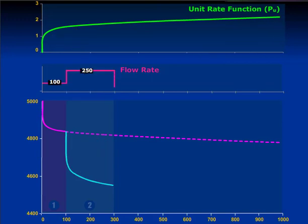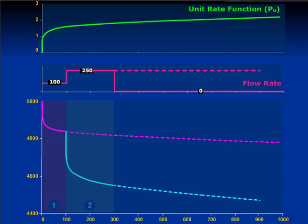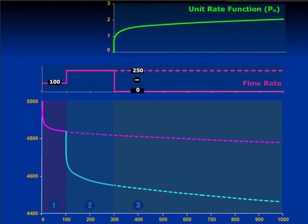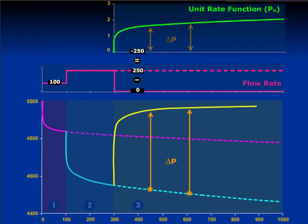When we come to the third rate — which happens to be a shut-in in this case, and we don't care whether the rates are flows or shut-in — we're going to continue the same thing. We extrapolate the second rate, and at this point in time we will start a new well. But this time the rate of the new well is 0 minus 250, so it's a negative rate, and because of that the delta P's go up. The procedure is very straightforward. What we've generated from this unit rate function is the superposition function — the pressure behavior of the multirate situation.